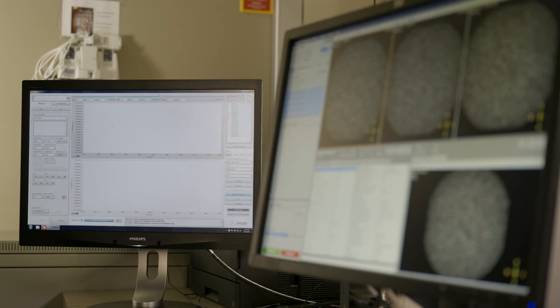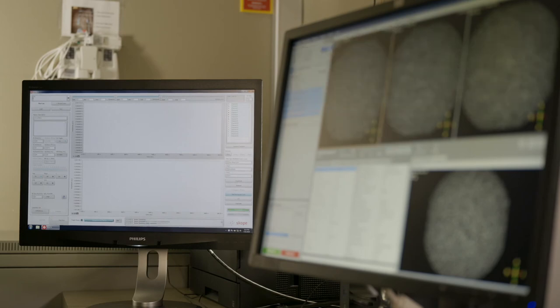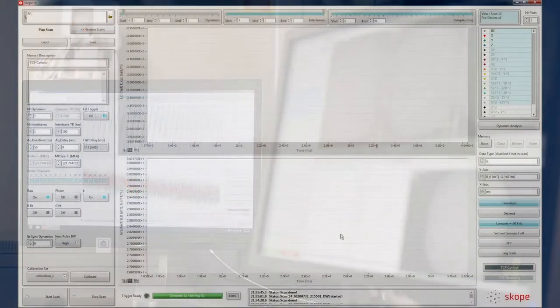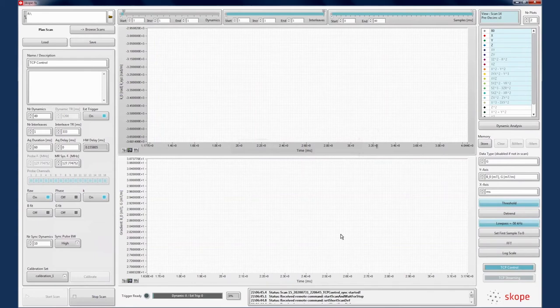We enable the remote acquisition interface and start a scope-aware exam card. We can see the scope system is now under the scanner's control. The values for a DWI spiral scan are populating in the acquisition system. Now we start the scan, and you can see the scope system ready itself and start acquiring. In this way, we can make the process of measuring field dynamics even easier.